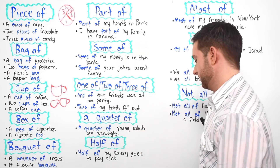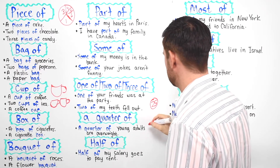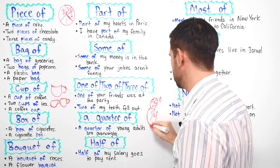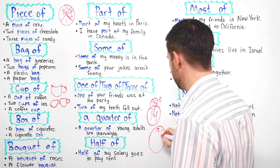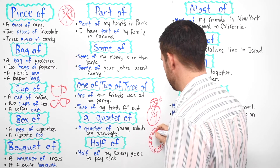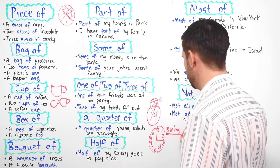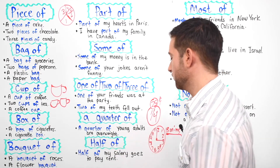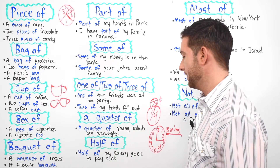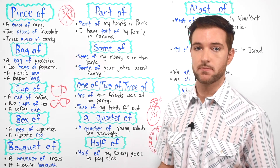Now we have "a quarter of." A quarter is 25 cents in terms of currency in America. So a quarter is one fourth. Or if you're talking about time, a quarter is equivalent to about 15 minutes. A quarter of young adults are overweight, meaning one fourth or 25% of young adults are overweight. Overweight means the amount that you weigh is too much — more than what's recommended by the doctor.